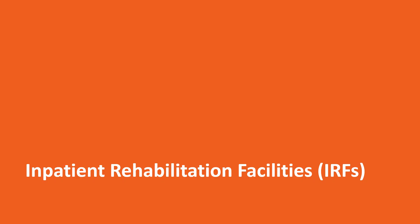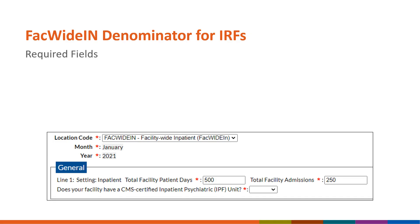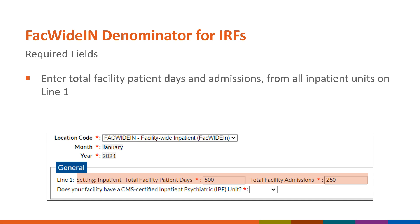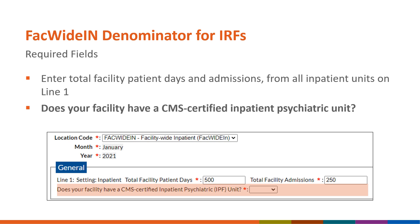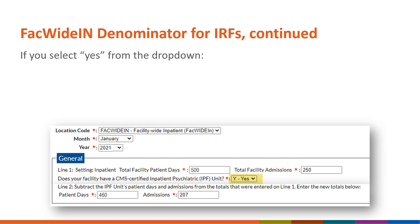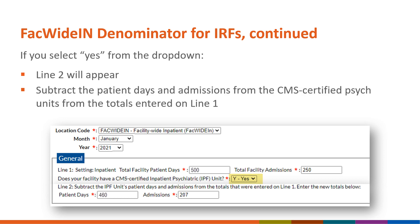The following section is specific to the FACWIDEIN denominator form for freestanding inpatient rehabilitation facilities or IRFs. This screenshot highlights the required fields that need to be entered by freestanding IRFs to successfully save the form. A new required question has been added under line 1 which states: Does your facility have a CMS certified inpatient psychiatric unit? You can select yes or no from the drop-down. If you select yes, line 2 will appear on the form, and totals from the CMS certified psych units should be subtracted from the totals on line 1, with the new totals entered on line 2.